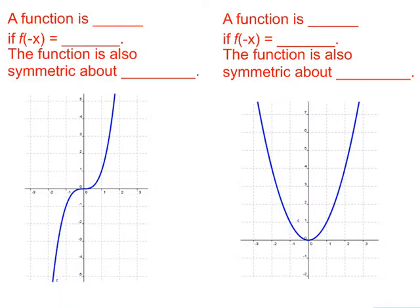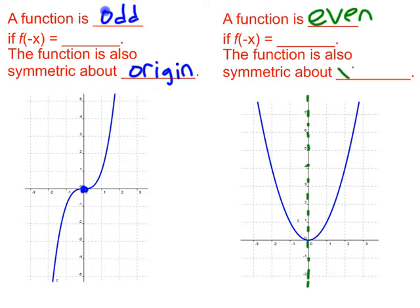So, you should remember this from class, that we call a function odd if it looks like this one on the left. That function is symmetric about the origin. This one on the right we say is even, and it is symmetric about the y-axis. I have a feeling most students got that.